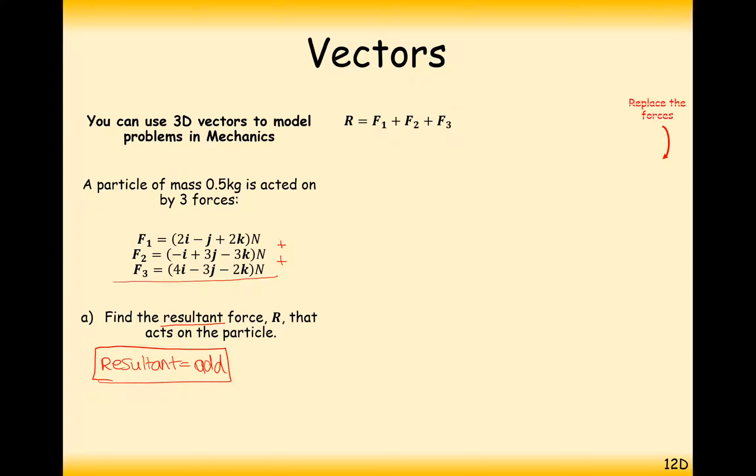So adding the forces together here, remember we're going to add the i's together, the j's together, and the k's together, gives us 5i minus j minus 3k. So that's the resultant force.